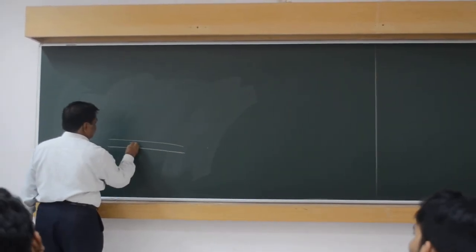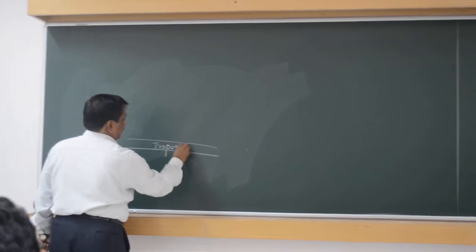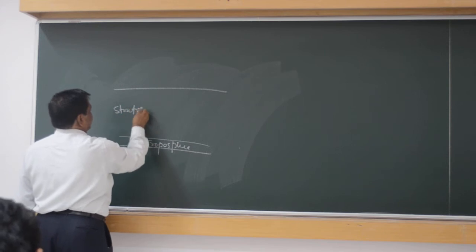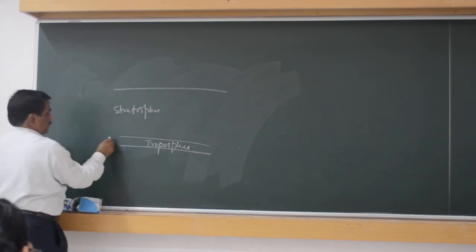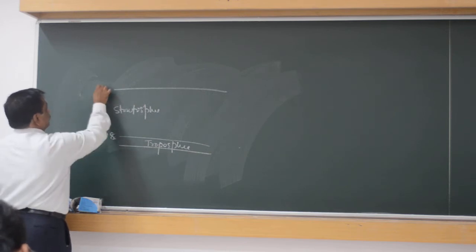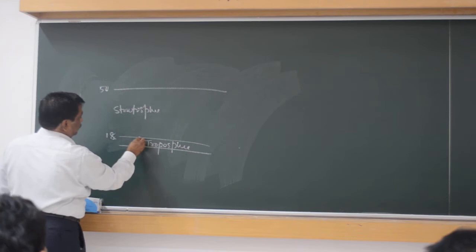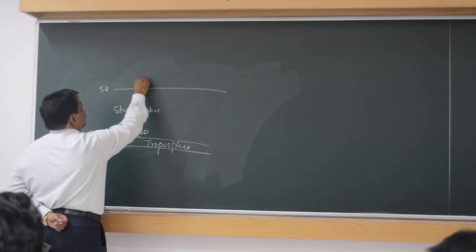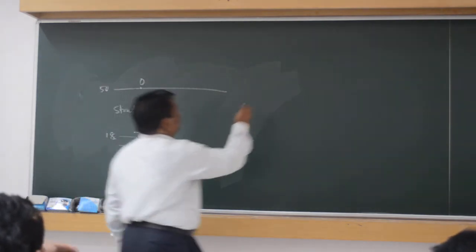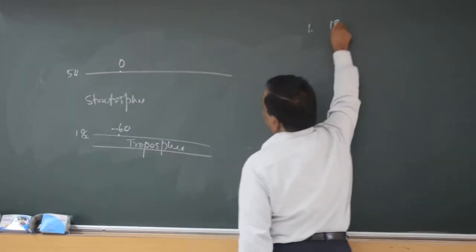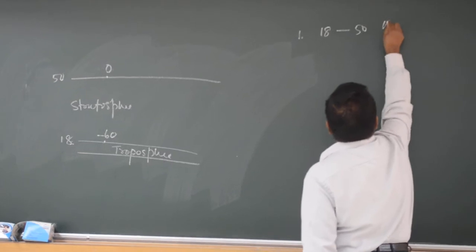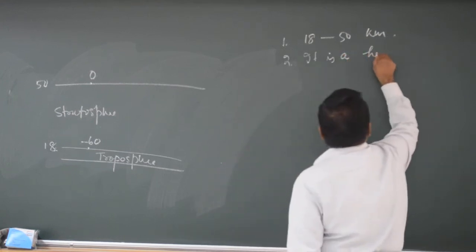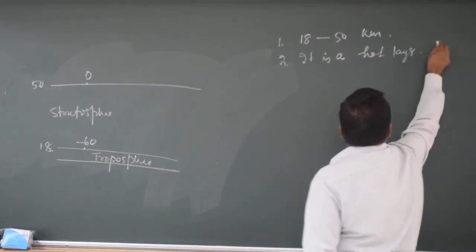Let us go to the protosphere. What is the thickness? Here temperature was minus 60, here temperature is 0. You can write from 80 to 50, see the inside diagram. Here it is a hot layer but below.